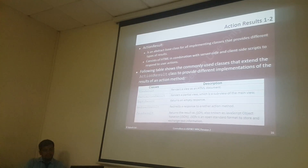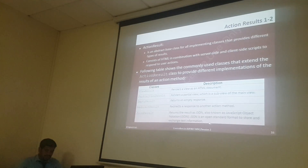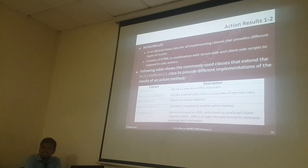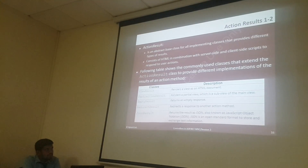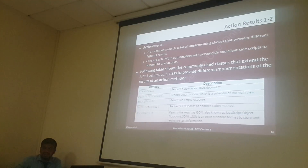JsonResult — it returns the result as JSON, also known as JavaScript Object Notation. JSON is the open standard for data exchange and information. JSON is mainly for data connections — if you want to send some JSON files as a response, so that time we are using JsonResult. These are all the different methods or the different classes which are present in the ActionResult class.